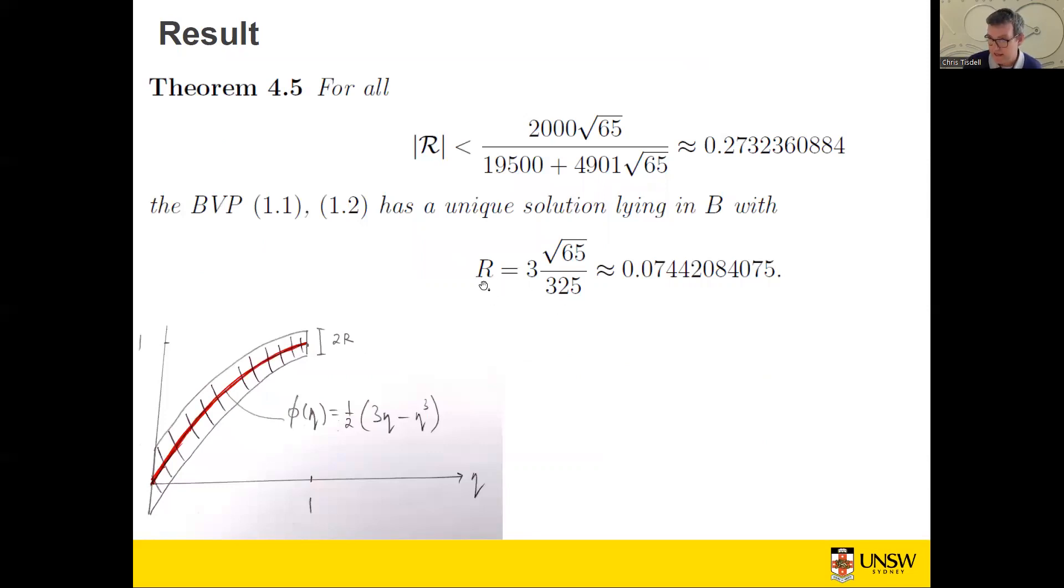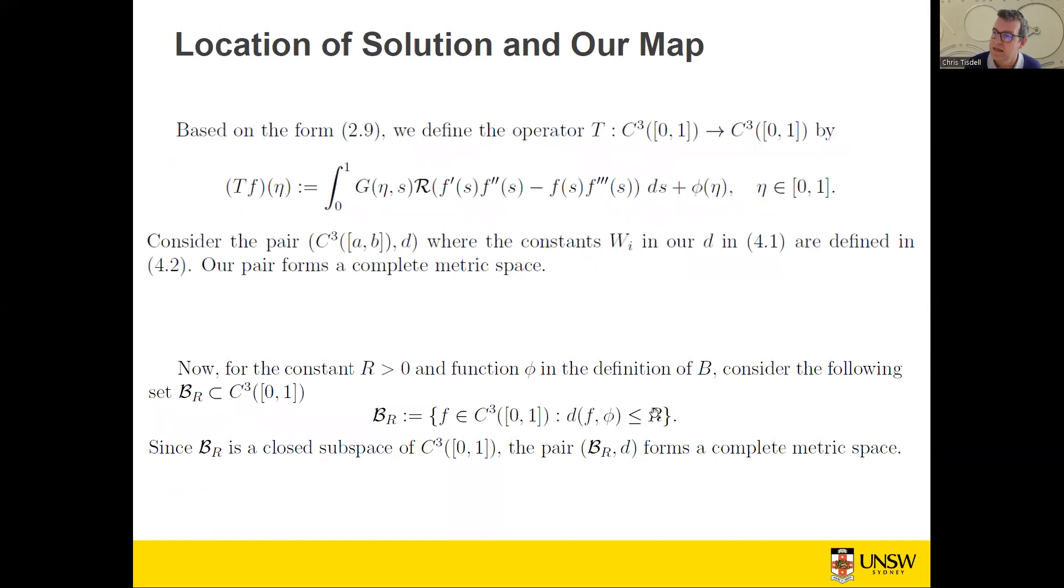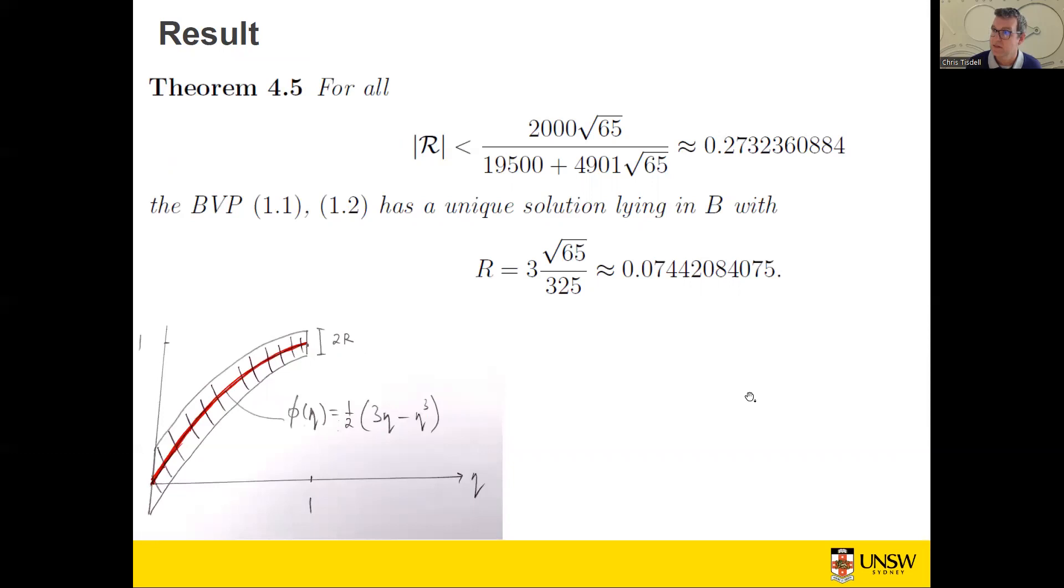Also, when we do this, this R is pretty small. Basically the R would be for this particular case about 0.07 around that. So what that means is if I draw a little strip with my homogeneous solution, what this theorem says is that if I have a small enough Reynolds number, then my boundary value problem has a unique solution whose graph lies in this little strip, where this R is about 0.07. You would kind of expect this, because if I look at this differential equation here, if R is small, this Reynolds number, if calligraphic R is small, then you wouldn't expect the solution to deviate too much from the homogeneous solution.